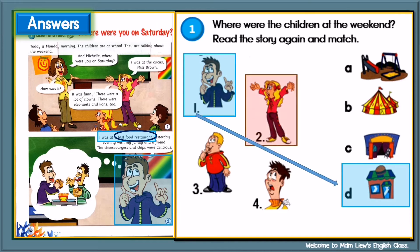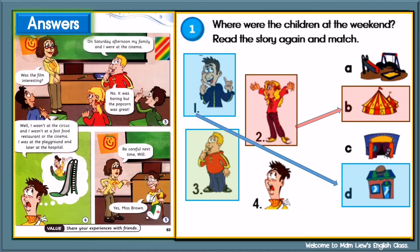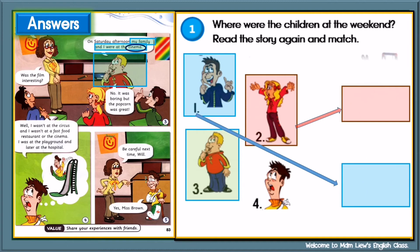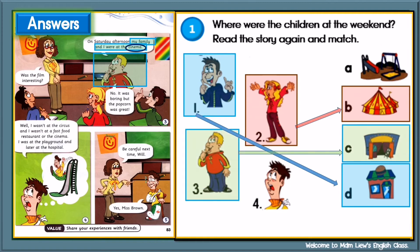Number 2: I was at the circus. Which picture is the circus? Good — B. Number 2: B — circus. Number 3: My family and I were at the cinema. Which picture is the cinema? Good — C. Number 3: C — cinema.